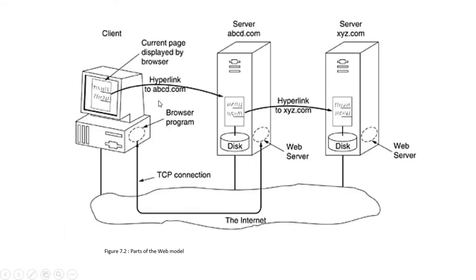For example, a request goes to the server of abcd.com. The file is fetched from the disk — files are stored inside the disk or database of the server. Whenever a client requests a file, the server fetches it from the disk, accesses the file, and responds to the client. The response is via a TCP connection.